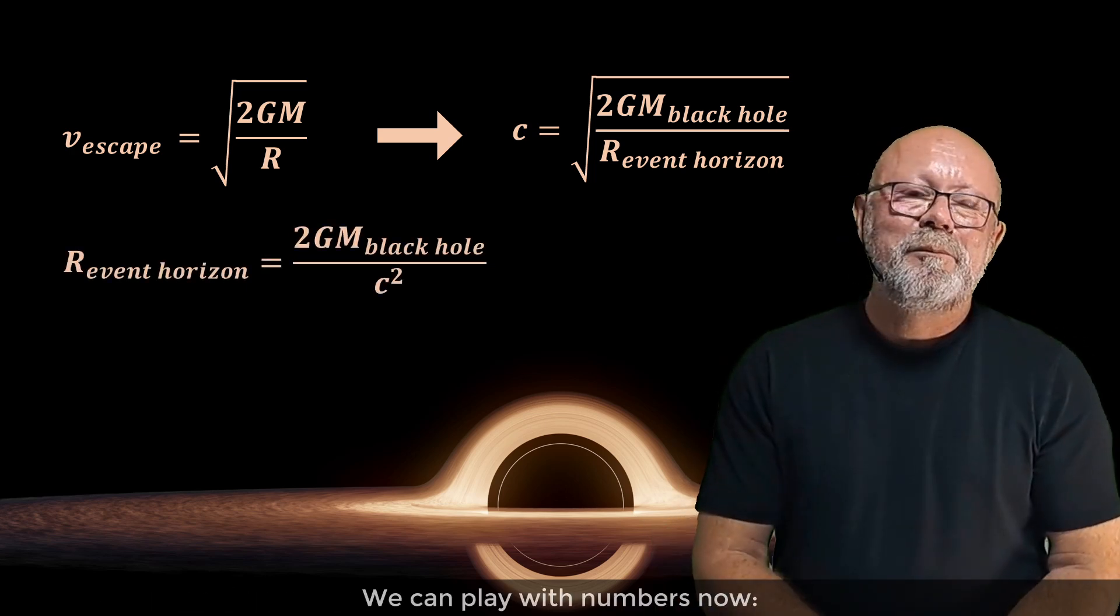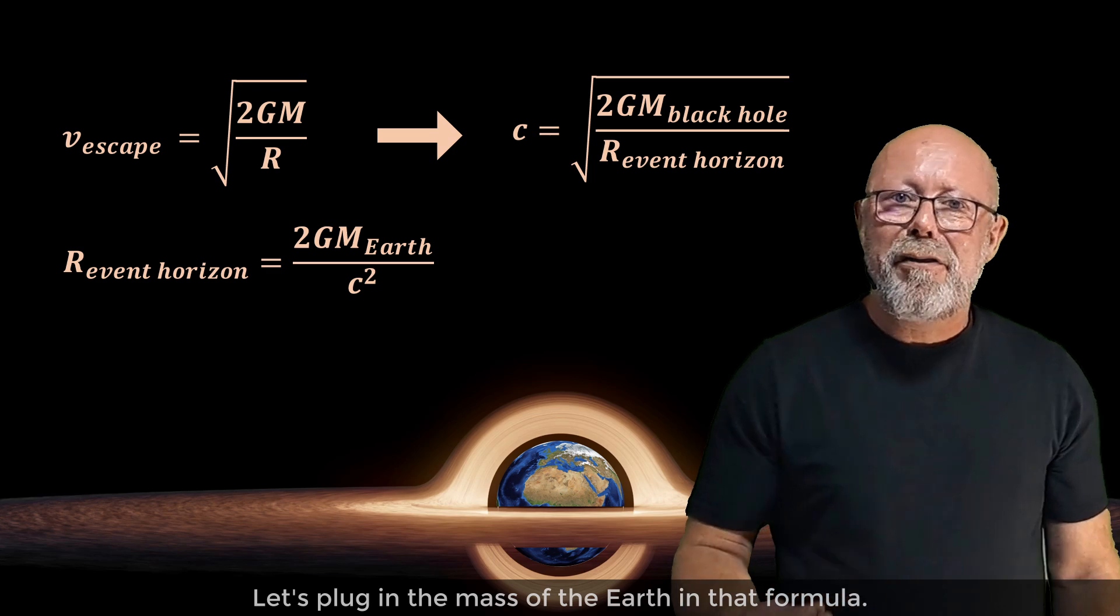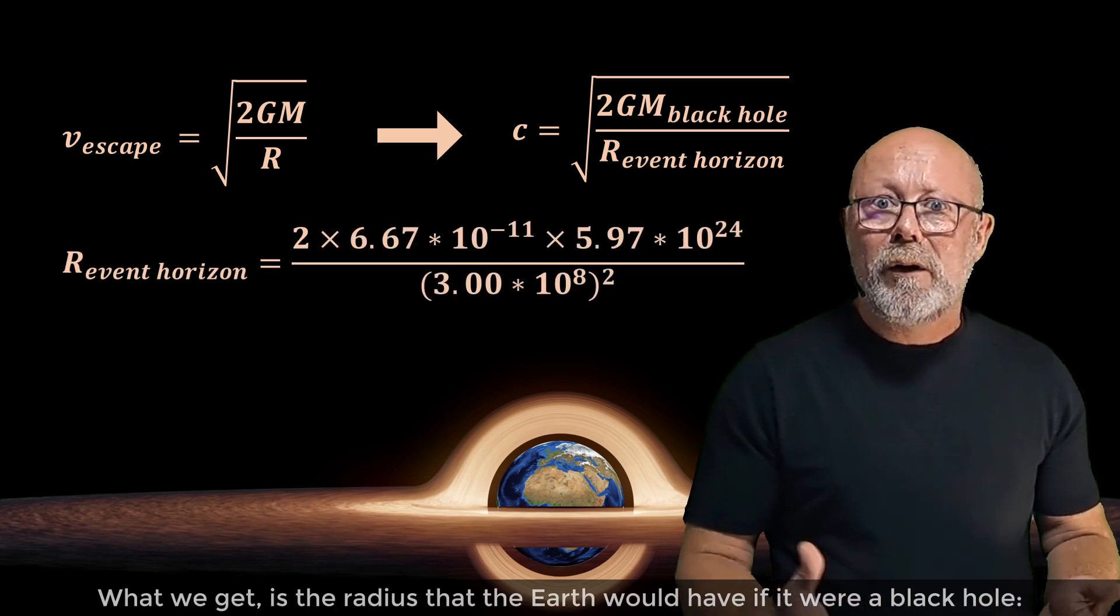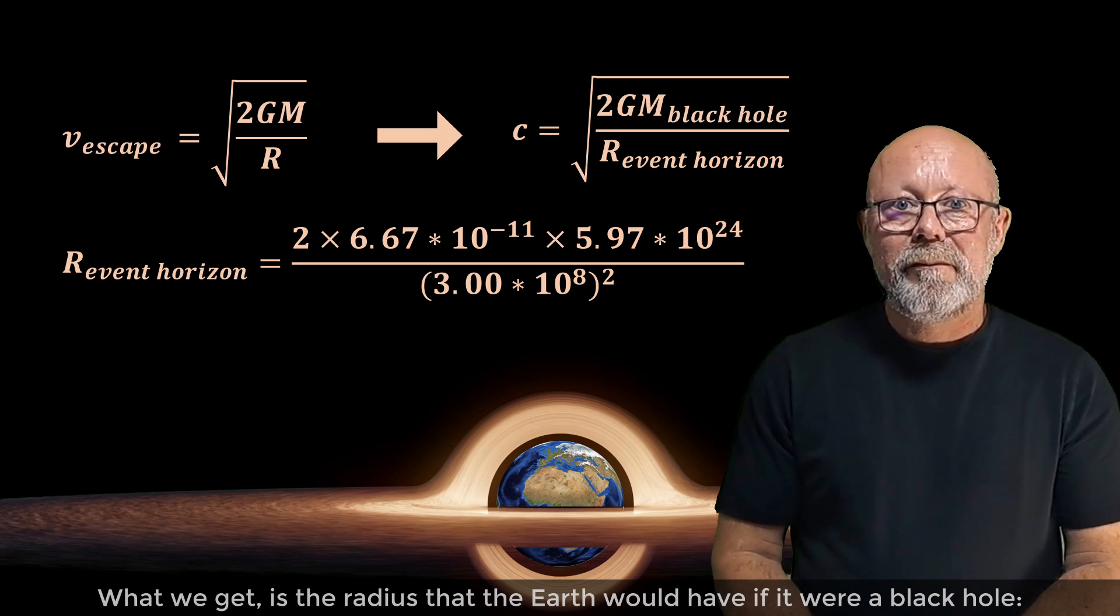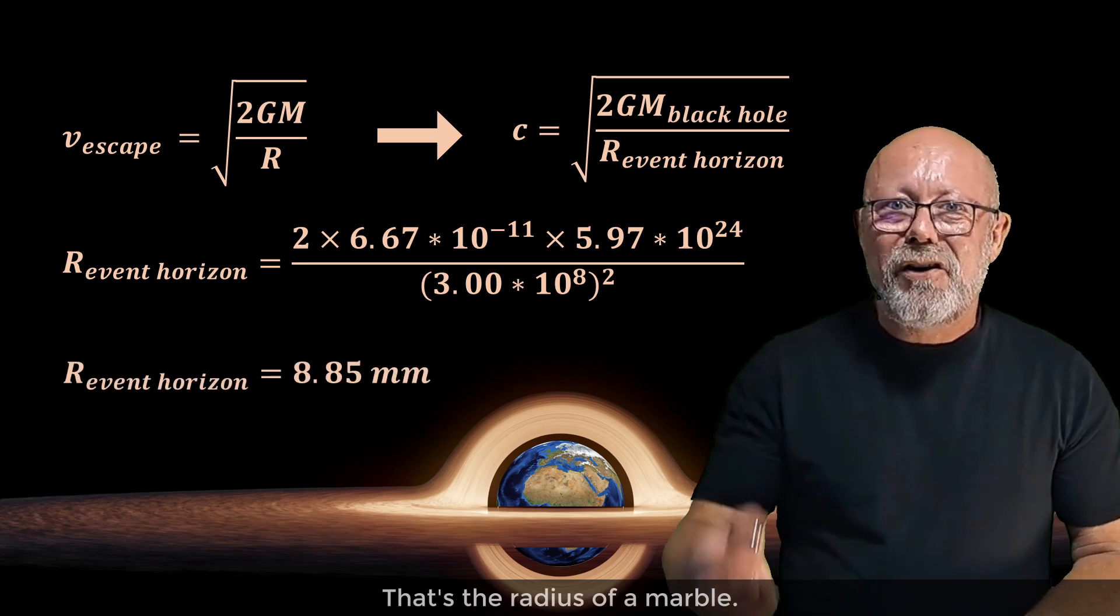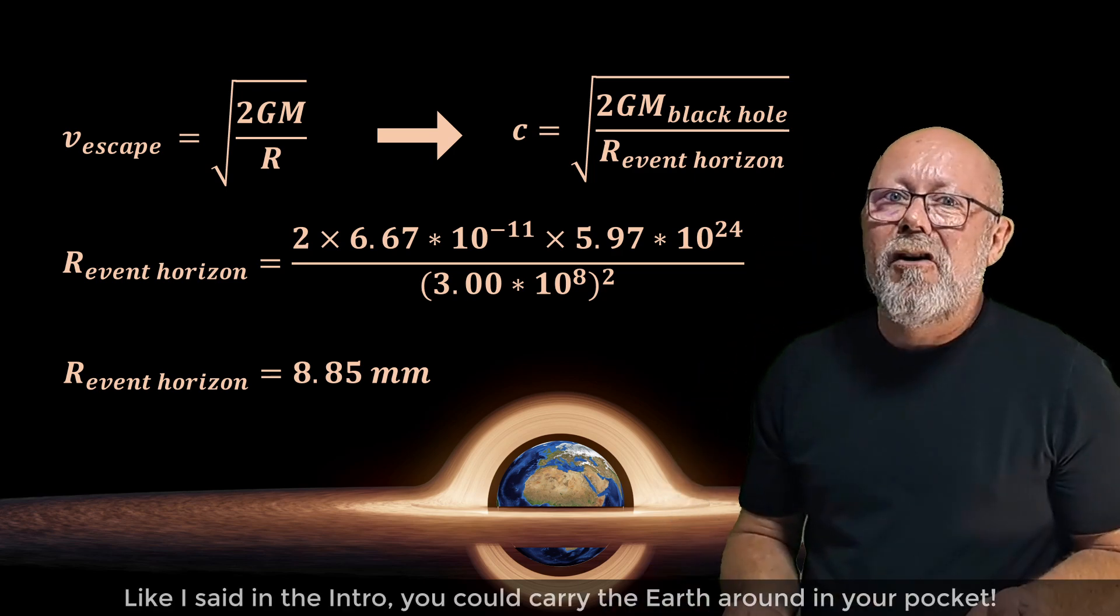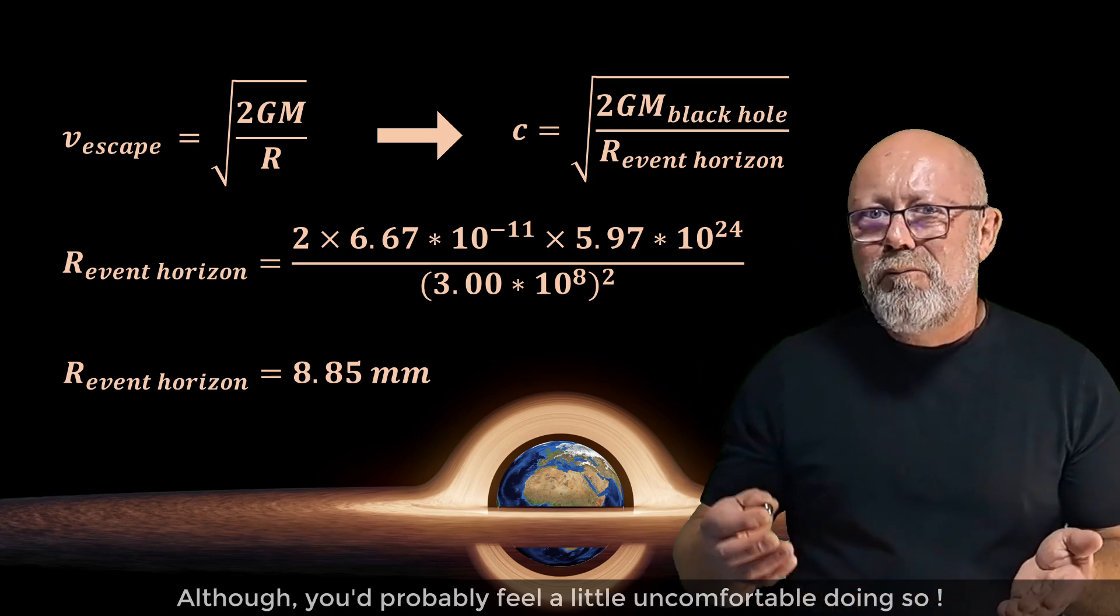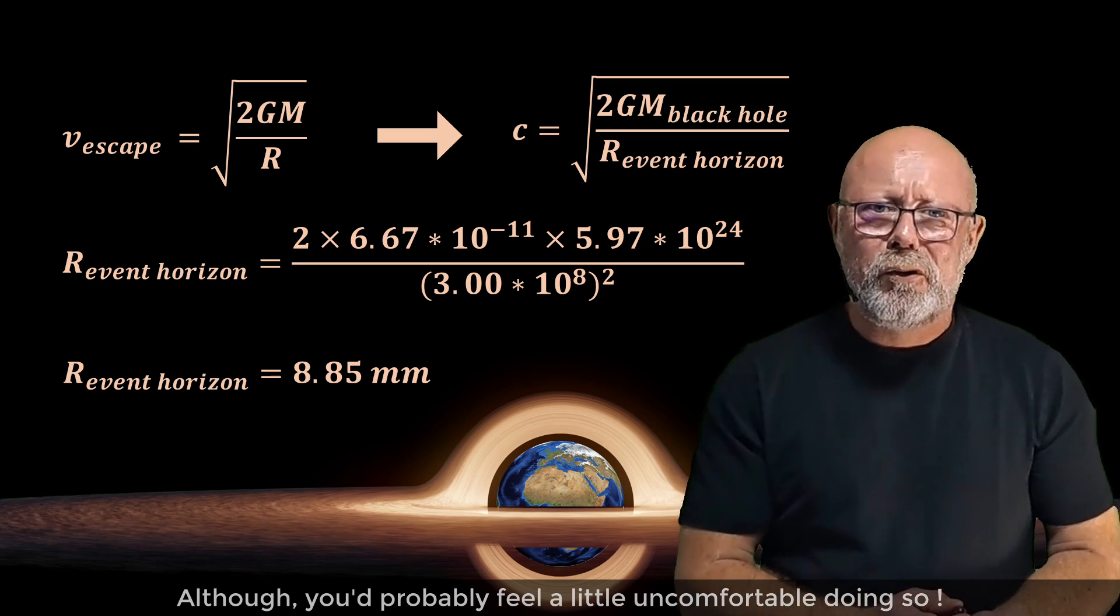We can play with numbers now. Let's plug in the mass of the Earth in that formula. What we get is the radius that the Earth would have if it were a black hole: 9 mm. That's the radius of a marble. Like I said in the intro, you could carry the Earth around in your pocket, although you'd probably feel a little uncomfortable doing so.